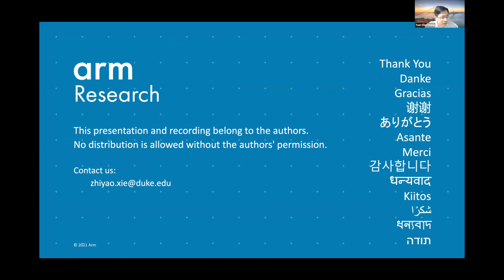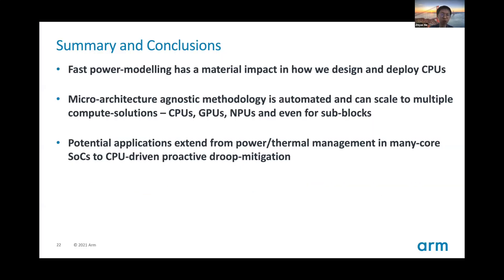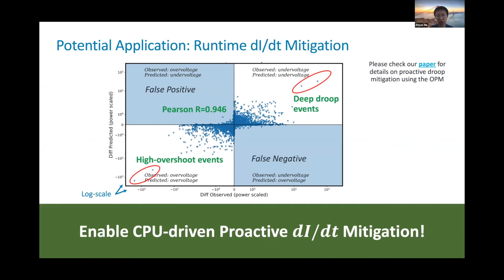Thank you very much for the excellent talk — that is a very excellent work on power modeling. Could you please look at the chat? There are some questions. The first question is about the possibility of running the proposed approach on different CPUs, such as Intel. As I mentioned, in principle we believe this method can be easily transferred to different designs because it doesn't require any prior knowledge on the design — we even believe it can scale to GPUs. It should not be very difficult to implement on Intel or any other open-source CPUs, though the results require more experiments.